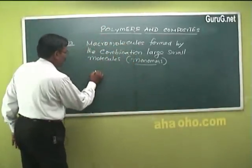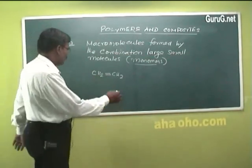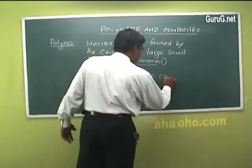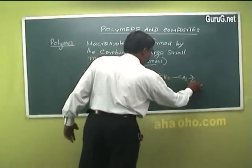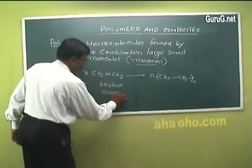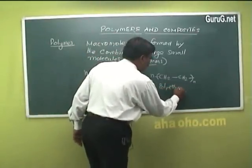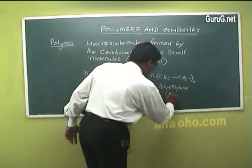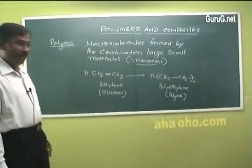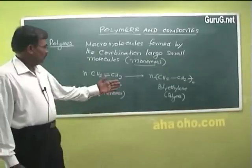Let us see an example for a polymer. Here I am taking ethylene as a small molecule — of course it is a gas. A large number of ethylene molecules combine to give a macromolecule with very high molecular weight; this is called a polymer. So ethylene is the monomer that combines to form polythene or polyethylene — both names are valid — and this is the polymer.